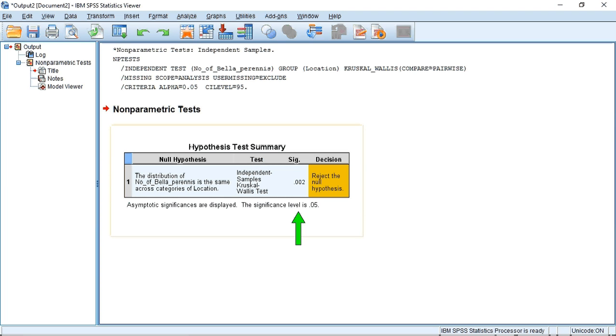A significance of 0.002 means we can reject the null hypothesis, and SPSS has told us that.